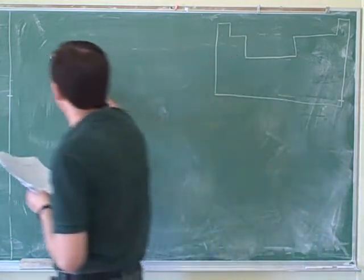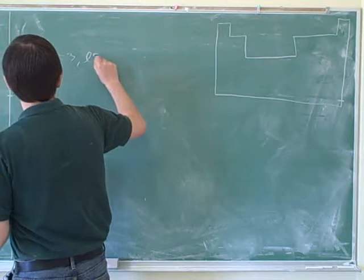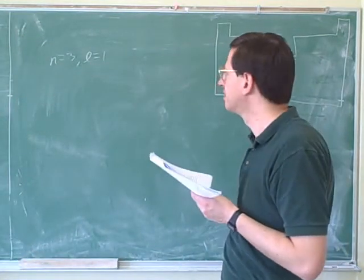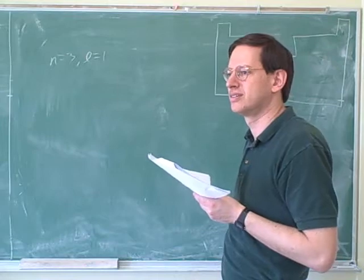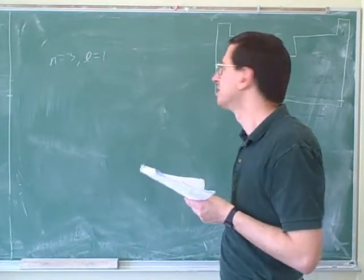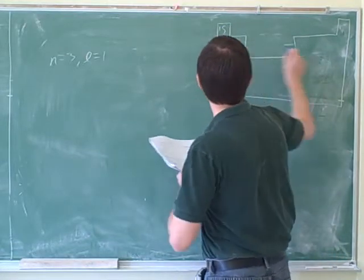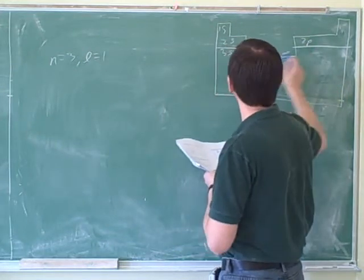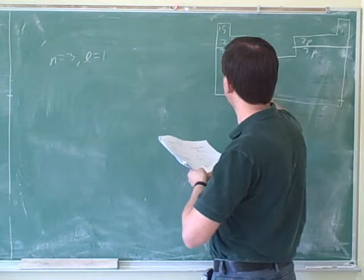N equals 3, l equals 1. Which block in the periodic table is that? So, 1s, then 2s, 2p, then 3s right below that. So which block is it?